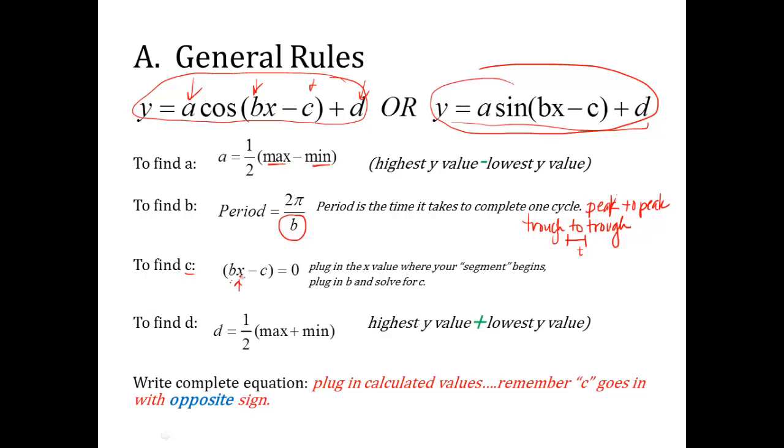So to find c, you already know b from before. The x value, plug in the x value where your segment begins. And I'll show you what I mean by segment, because these curves are going for infinity. You pick a segment to work with, and the x value where your segment begins is what you're going to put in for x. So b times whatever that x is, minus c equals 0, and you solve it for c.